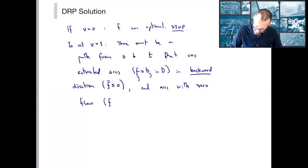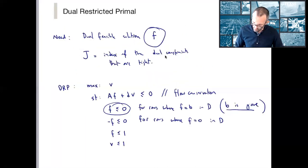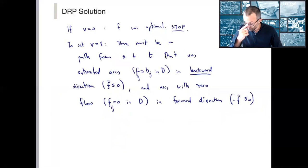Flipping back again, that's this. And that's saying that, yes, you're allowed to use those arcs, but they have to be in the backward direction. F has to be negative or non-positive. And this path has to use arcs with zero flow. In other words, Fij equals zero in the dual problem. In the forward direction, this is saying that F bar has to be non-negative, which I wrote as minus F bar less than zero. So let's see that constraint, that's here. Minus F is less than zero for arcs that had zero flow.